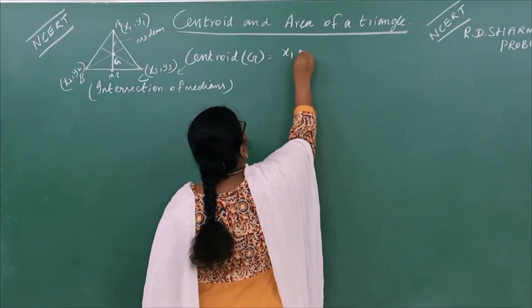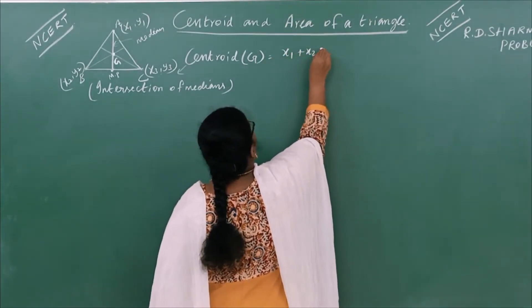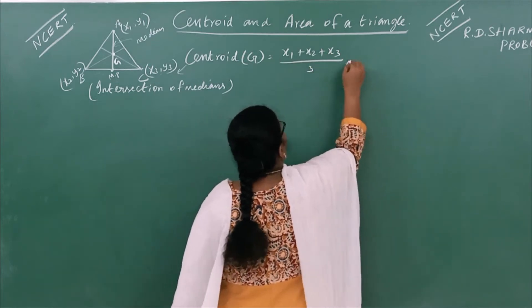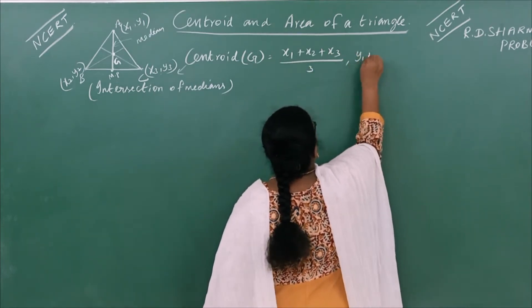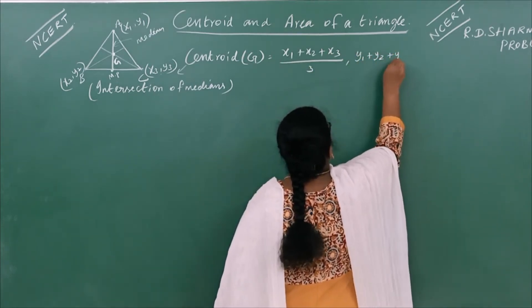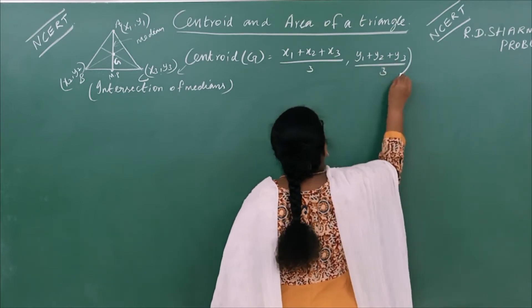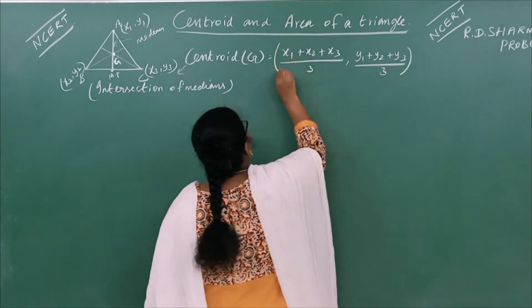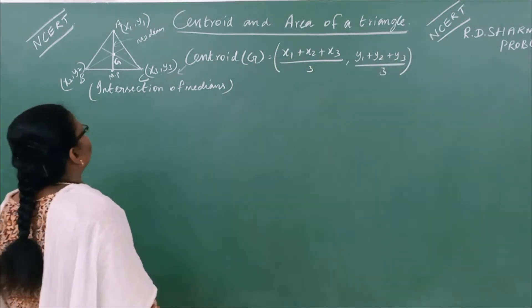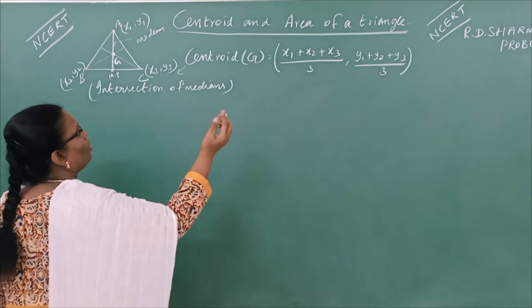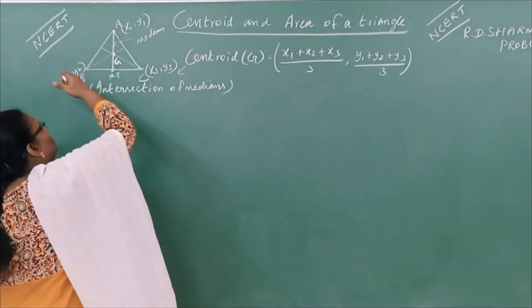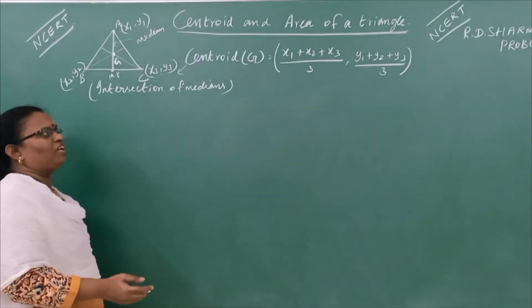Let's see. The vertices are x1, y1; x2, y2; x3, y3. The centroid formula gives: x1 plus y1 plus — that's the centroid. Where x1, y1; x2, y2; x3, y3 are the vertices of a triangle.